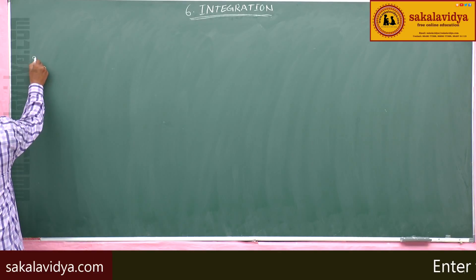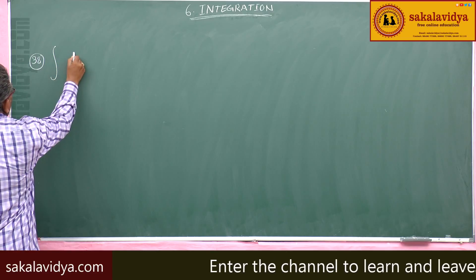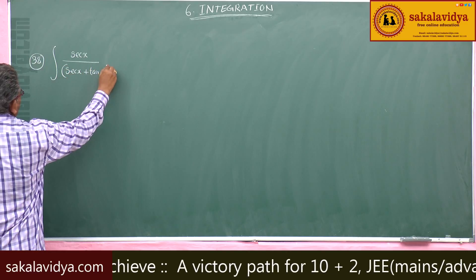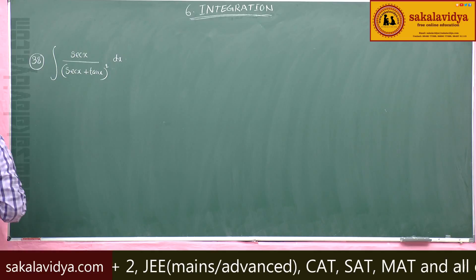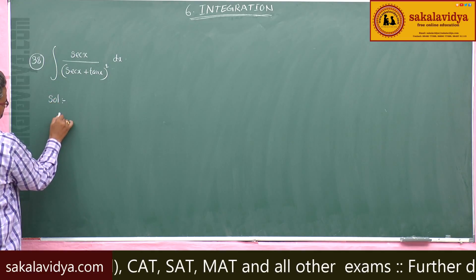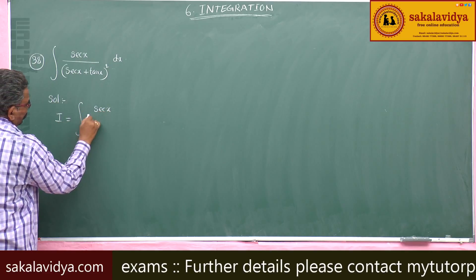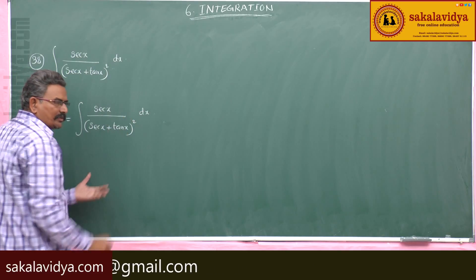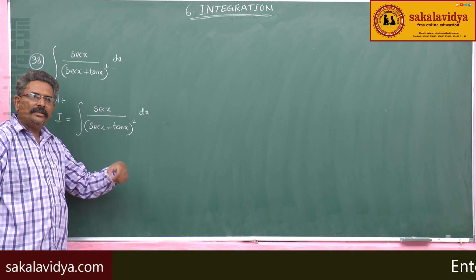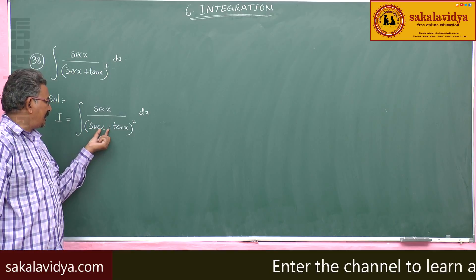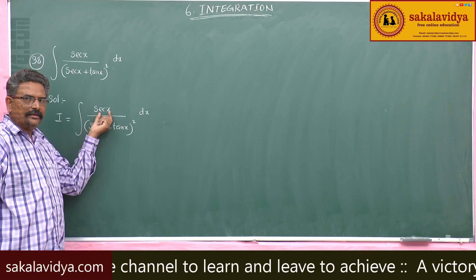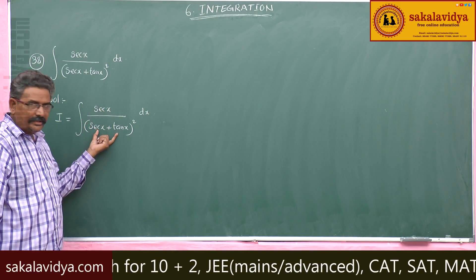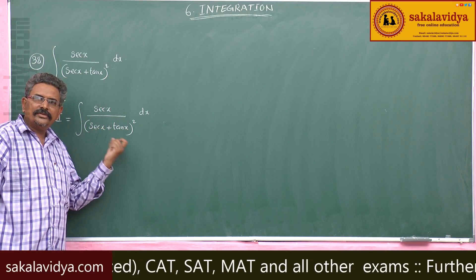The 38th problem: evaluate the integral of sec x divided by (sec x plus tan x) whole squared dx. If we let sec x plus tan x equal t, its derivative is sec x tan x plus sec squared x, but we do not have that in the numerator directly. So multiply both numerator and denominator by (sec x plus tan x) so that the numerator becomes the derivative of sec x plus tan x.